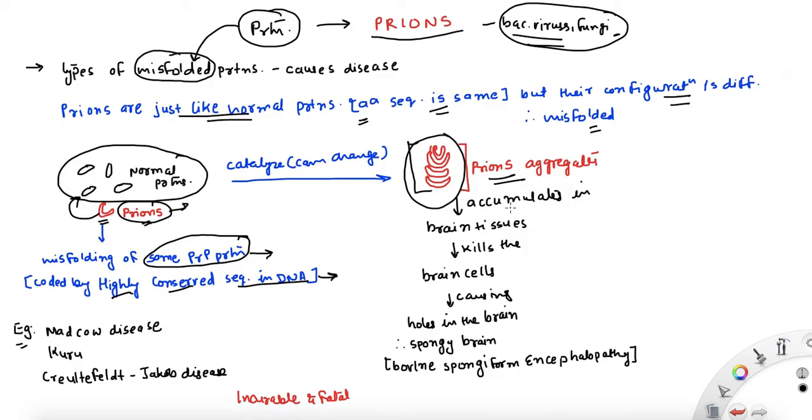And these aggregates of prions will start accumulating in brain tissue. All of this happens in brain. Once they start accumulating in brain tissue, a lot of them, then they will start killing the brain cells. And once it starts killing the brain cells, it starts forming holes in the brain. And literally the brain will become a spongy brain, a sponge with holes inside it.